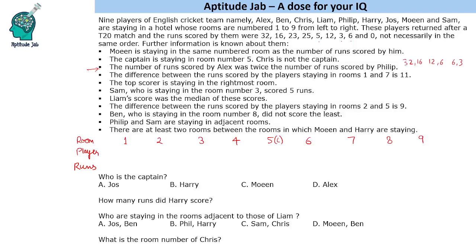Reading further, the top scorer is staying in the rightmost room — so room 9 has the top scorer, which is 32 runs. Sam is staying in room number 3 and scored 5 runs. So we fill in Sam at room 3 with 5 runs.